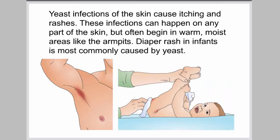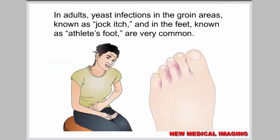Yeast infections of the skin cause itching and rashes. These infections can happen on any part of the skin, but often begin in warm, moist areas like the armpits. Diaper rash in infants is most commonly caused by yeast. In adults, yeast infections in the groin areas, known as jock itch, and in the feet, known as athlete's foot, are very common.